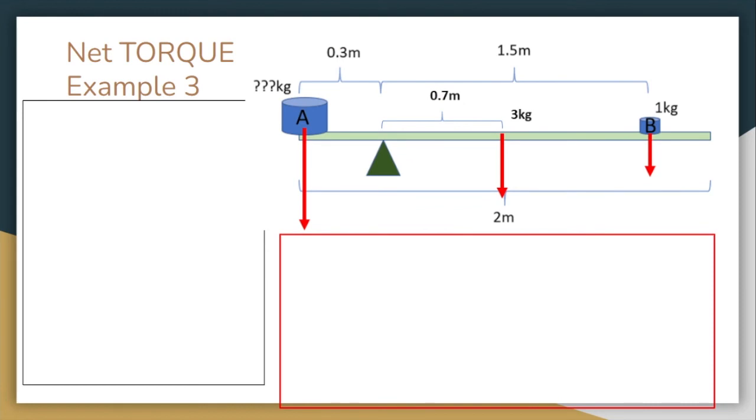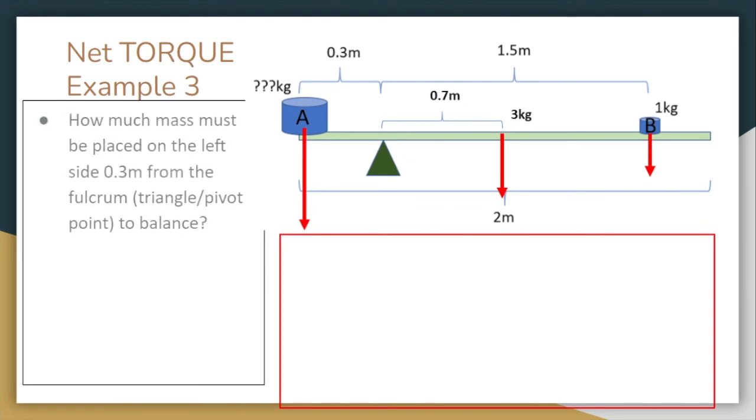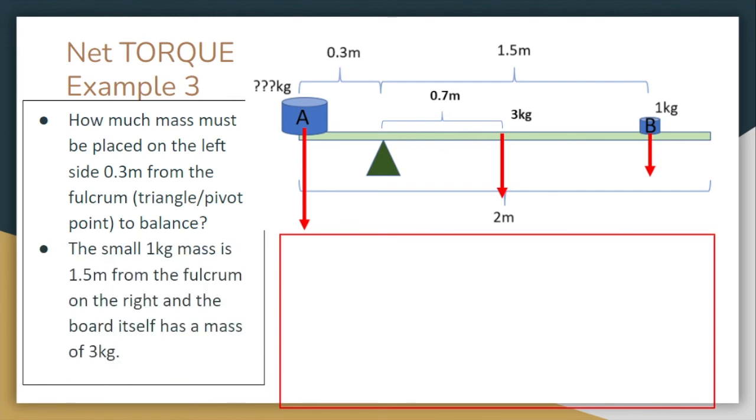Net torque example number three, here we go. How much mass must be placed on the left side? 0.3 meters from the fulcrum, which is just that little triangle, which is also just a pivot point. The small one kilogram mass is about 1.5 meters from the fulcrum on the right side, and the board itself has a mass of three kilograms. So that makes this problem slightly more difficult, but still manageable.